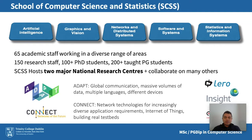This large school is structured into five disciplines, based on members' research areas and teaching interests. These disciplines are clusters or sub-departments of the school, respectively in the areas of artificial intelligence, graphics and vision, networks and distributed systems, software and systems, and statistics and information systems. It's interesting to note that four of those five disciplines are directly tied into the four MSc strands introduced at the start of this talk.